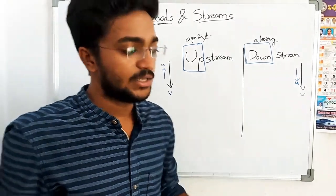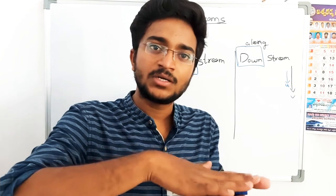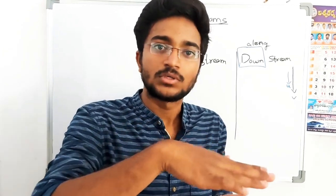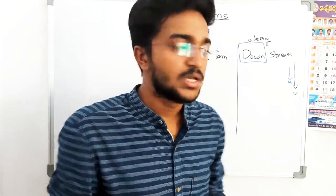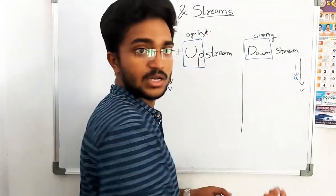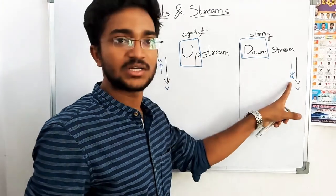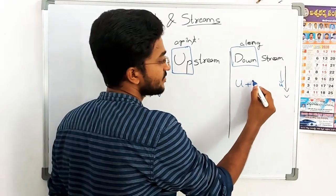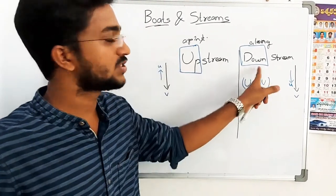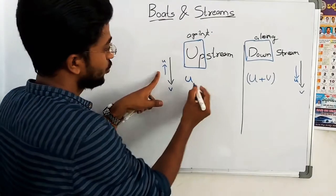In a practical example — similar to moving through a train — there are two specific speeds involved. The boat speed is generally denoted as U, the stream speed as V. The relative speed for downstream is U plus V. The relative speed for upstream is U minus V.